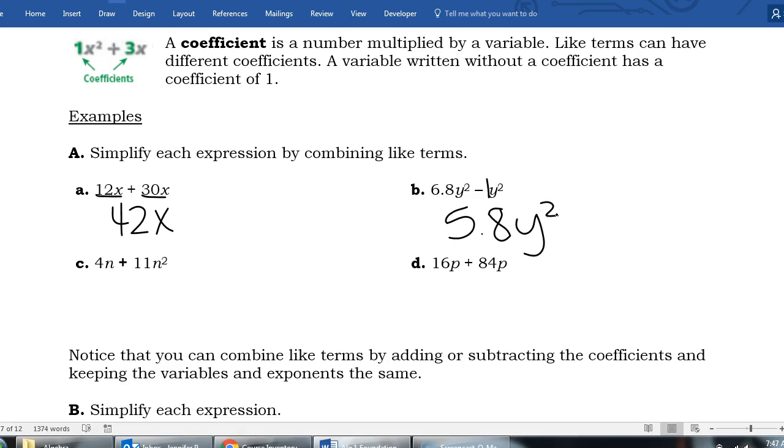Letter C, we have 4n plus 11n². And you might be tempted to say maybe 15n to the third, but it doesn't work that way. These are not like terms. Having 4n and then having 11n² might be the same as having 4 apples and 11 oranges. They don't go together. So actually this is already in simplest terms. There's nothing else that we can do to make that more simplified.